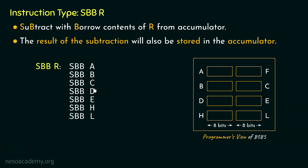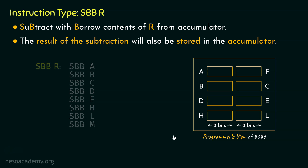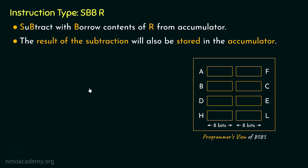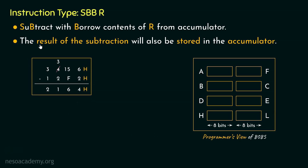The variants include SBBB, SBBC, SBBD, SBBE, SBBH, and SBBL for all general purpose registers. Along with these, we also consider the memory element pointed by the HL register pair. Now let's get back to our illustration — the subtraction we performed involved 16-bit numbers, but in the 8085 microprocessor we can only perform operations on 8-bit values.